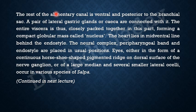The rest of the alimentary canal is ventral and posterior to the branchial sac. A pair of lateral gastric glands or caeca are connected with it. The entire viscera is thus closely packed together forming a compact lobular mass called the nucleus. The nucleus is where the whole alimentary tract is concentrated — around the stomach two glands are present, and the testes are in the loop of the intestine. The heart lies in the mid-ventral line behind the endostyle.